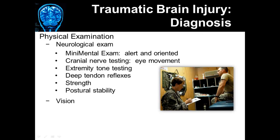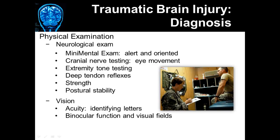In the physical exam there is also a vision test. Many blast-related injuries can result in problems to the eyes and the nerves that allow us to see. Vision acuity refers to the ability to identify letters on charts. The binocular function and visual fields test looks at whether or not you can see things in the center of your visual field as well as those things in the peripheral portion of your visual field.